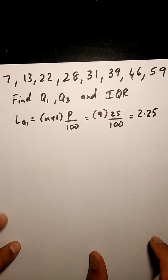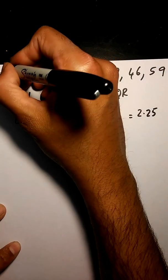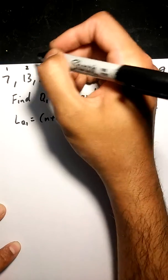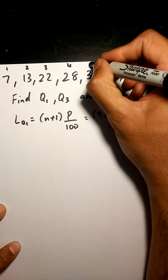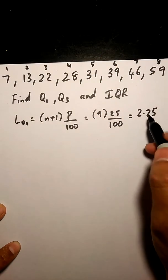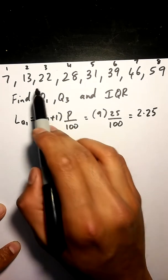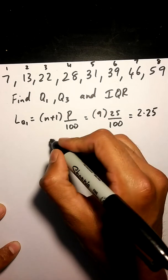Okay, so how do we find what number corresponds to an index of 2.25? Let's label our indexes up here: 1, 2, 3, 4, 5, 6, 7, 8. So we know 2.25 is between our index of 2 and 3, it's somewhere between 13 and 22.